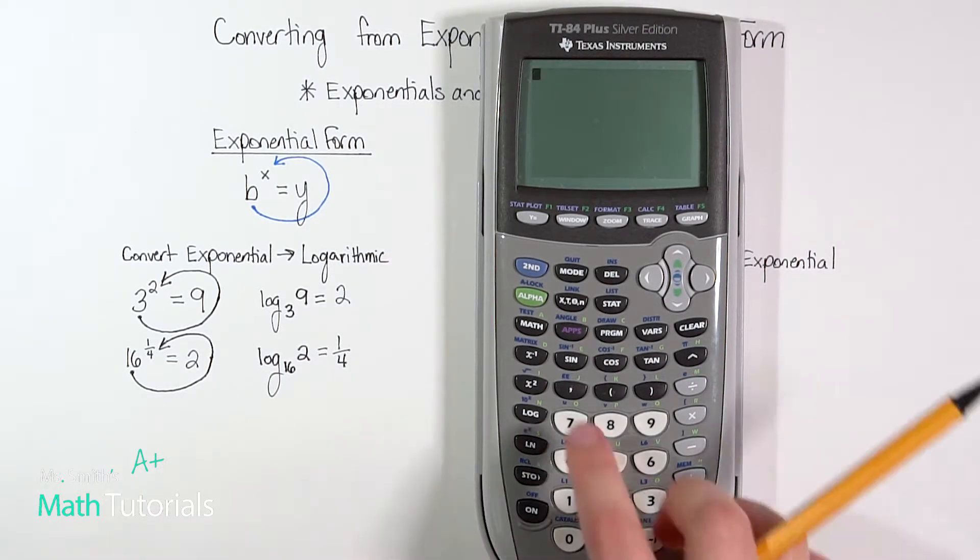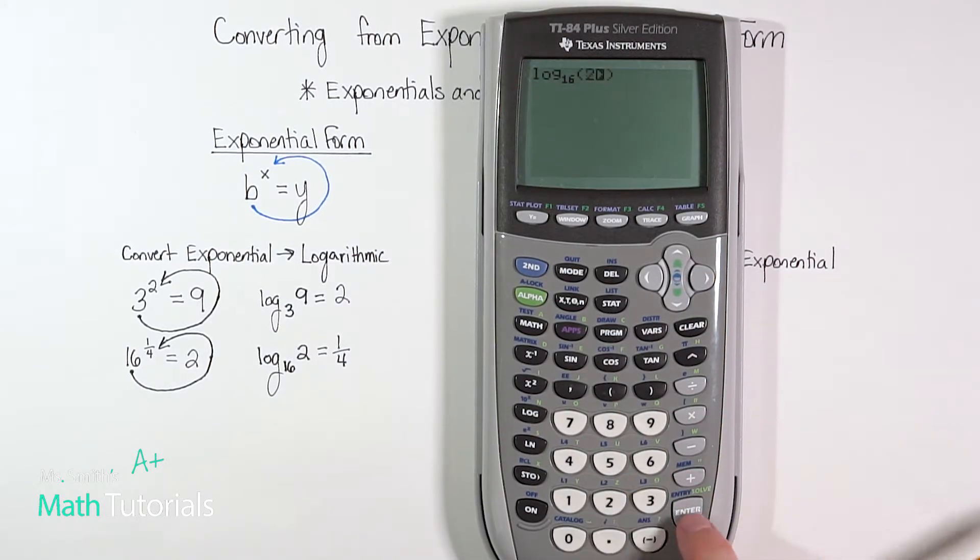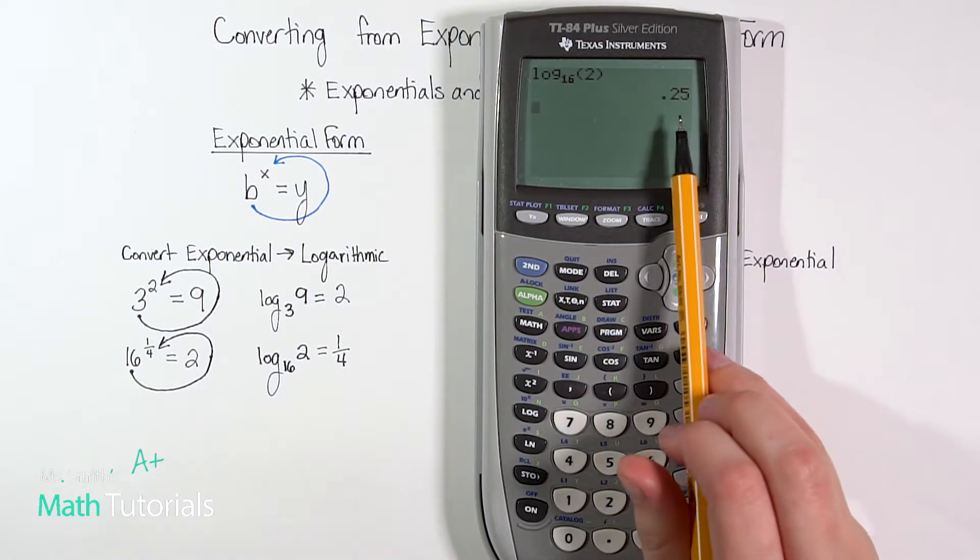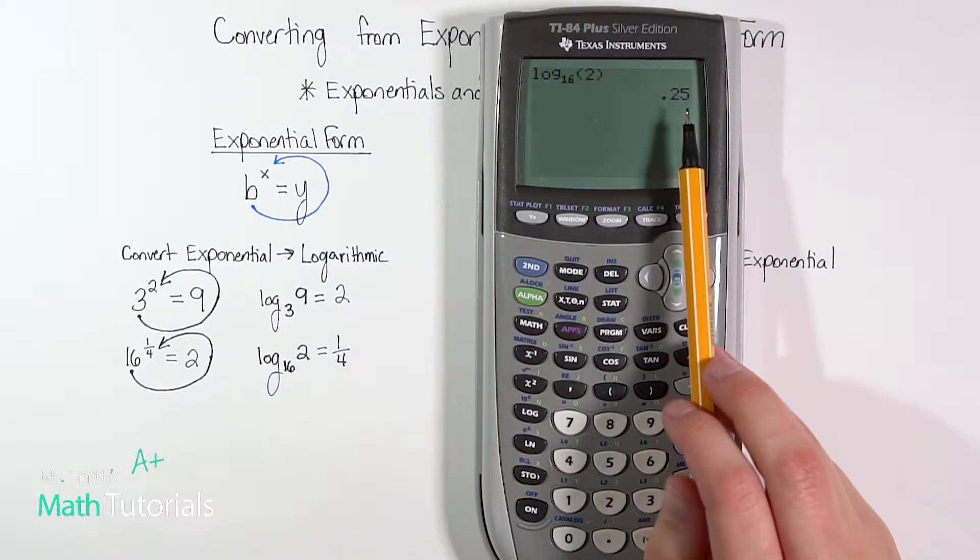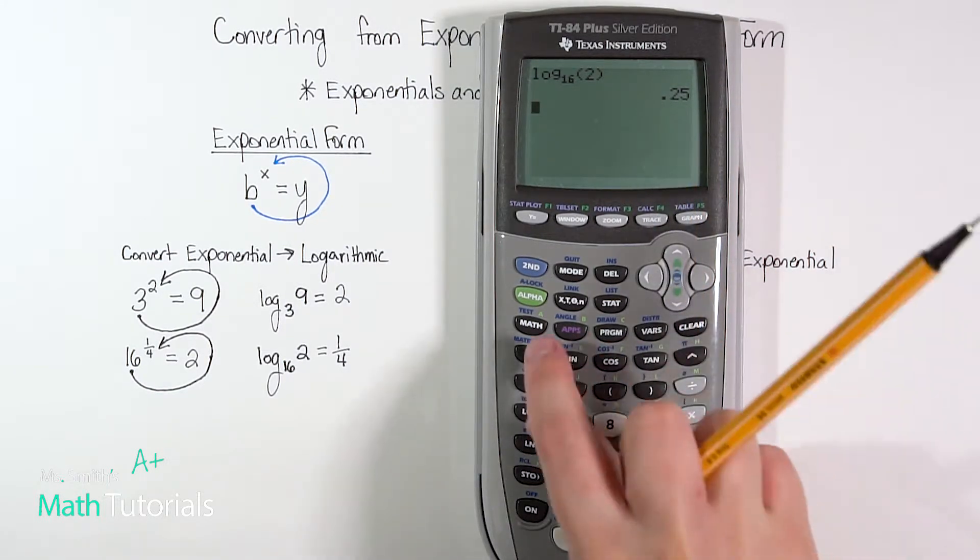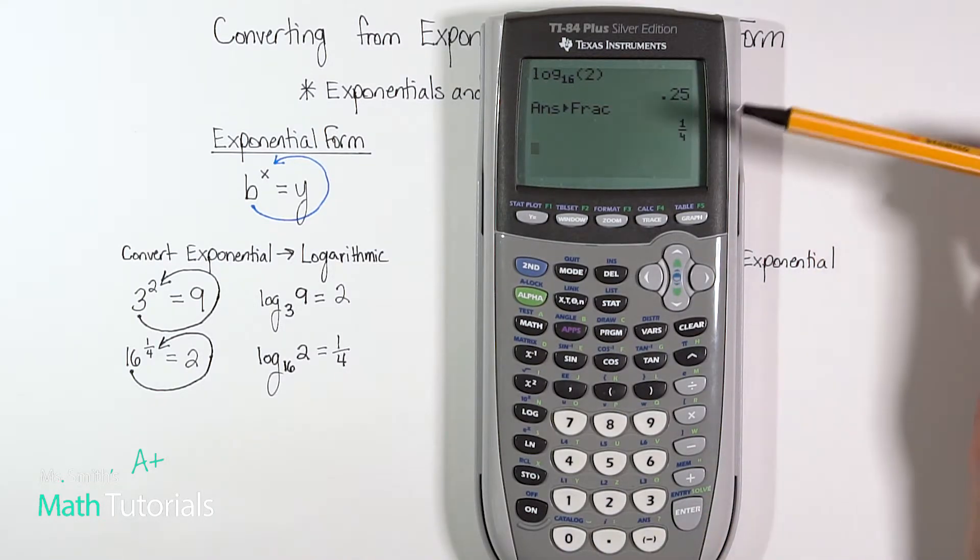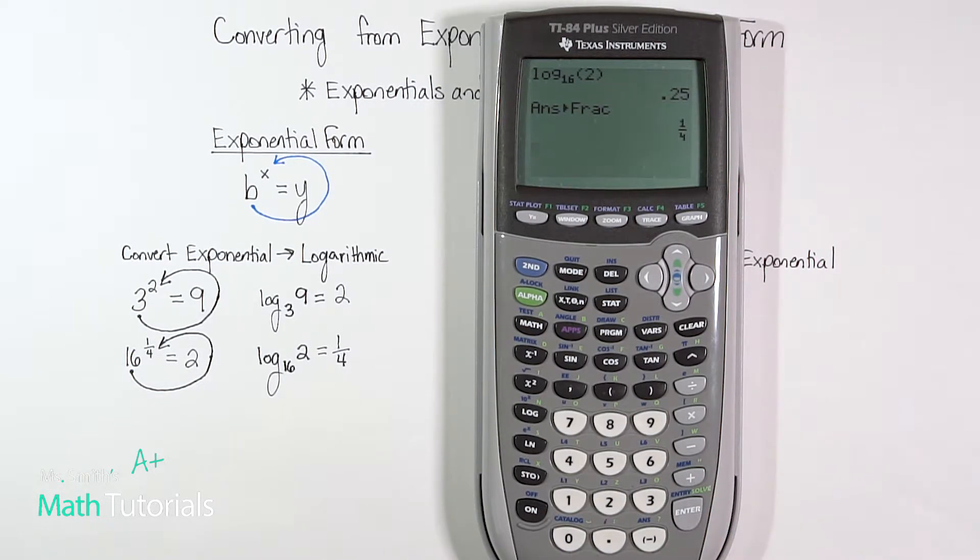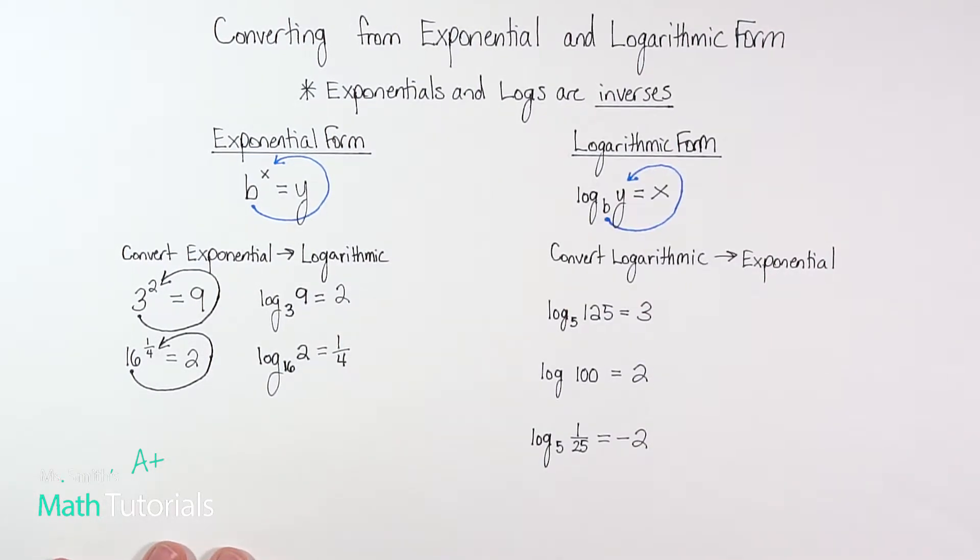We can double check this one as well. Math alpha math. So log base 16 of two, do I get one fourth, or it's going to give me the decimal 0.25? Yes. And if you're like, man, how do I know that 0.25 is one fourth? Well, we can turn any decimal into a fraction. Math, enter, enter. It'll convert the decimal into the fraction for you. So just some good calculator tricks there. But let's keep moving.